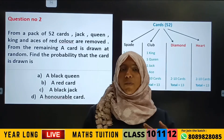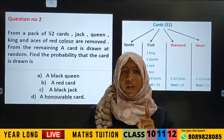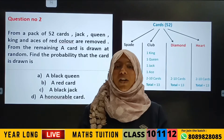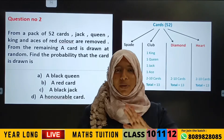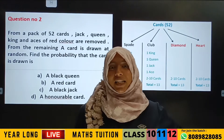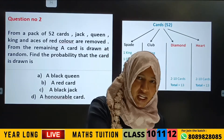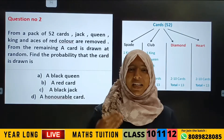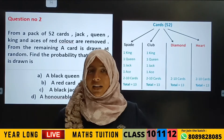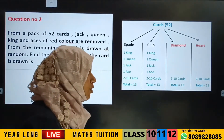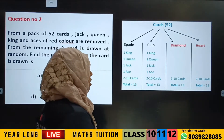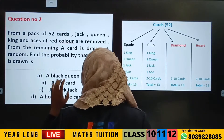So your total number of possible outcomes will change. That is why not 52. Because in this question, our total number of possible outcomes is 44. Why? Because 52 minus 8 is 44. So our total number of possible outcomes is 44.